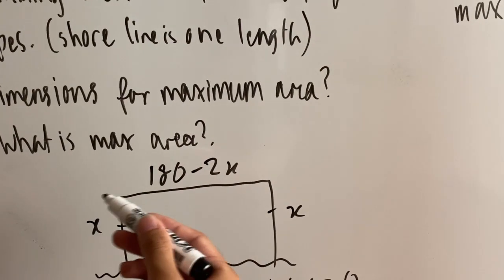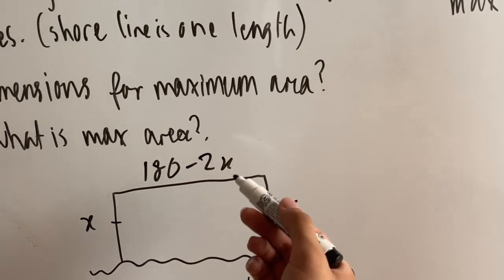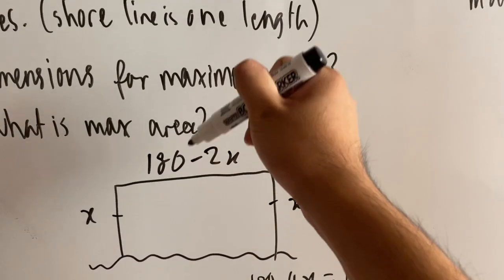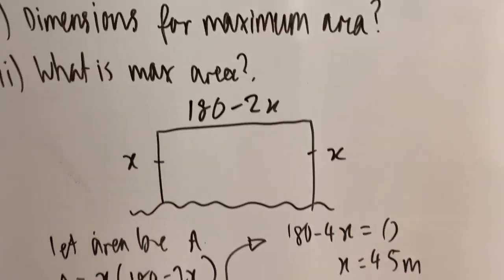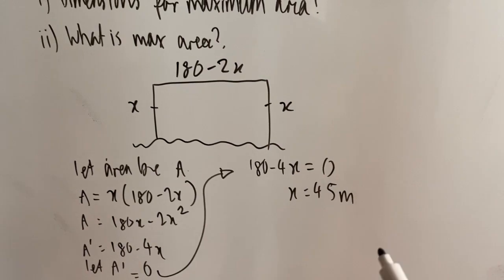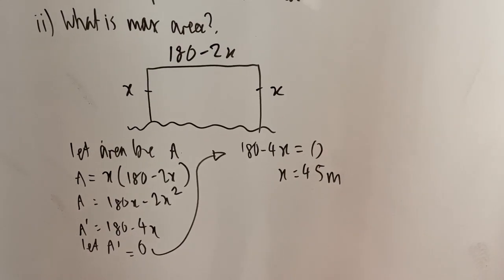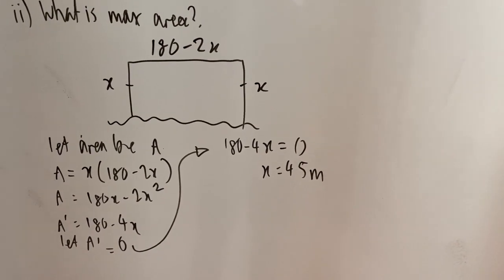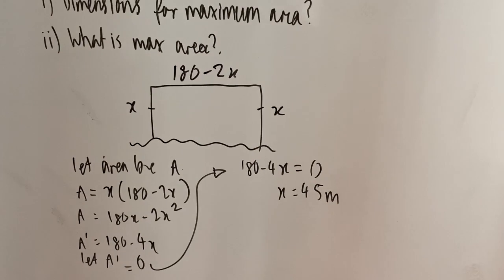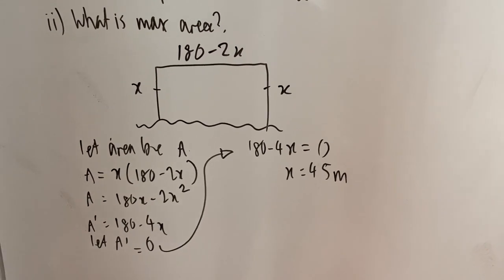So that means that x is equal to 45 meters on here, 45 meters on here. And along the top, it's going to be 180 minus 2 times 45. So it's going to be 90 meters up the top. Now, that's fantastic. I found that x is equal to 45 meters. But I still do need to show that this is actually a maximum area. And how do I show it's a maximum area?